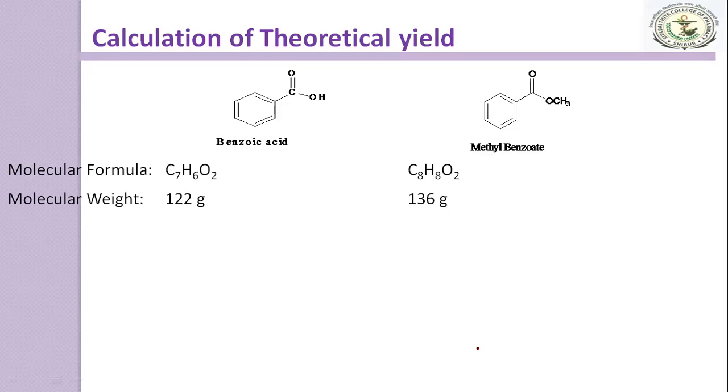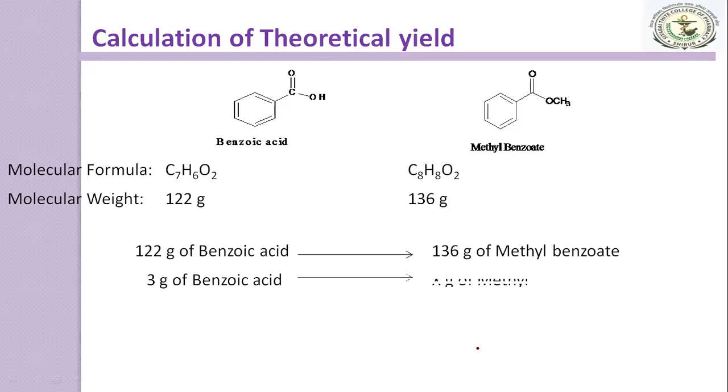Then calculate the theoretical yield. 122 g of benzoic acid gives 136 g of methyl benzoate. So 3 g of benzoic acid gives how much methyl benzoate? Here we have taken 3 g of benzoic acid. Make a cross multiplication and you will get the value which is the theoretical yield.